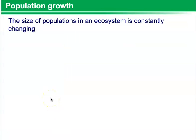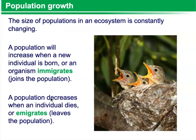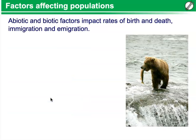Population growth. The size of populations in an ecosystem is constantly changing. A population will increase when a new individual is born or an organism immigrates or joins the population. A population can decrease when individuals die or individuals emigrate — that is, they leave the population, maybe to find resources in another area.